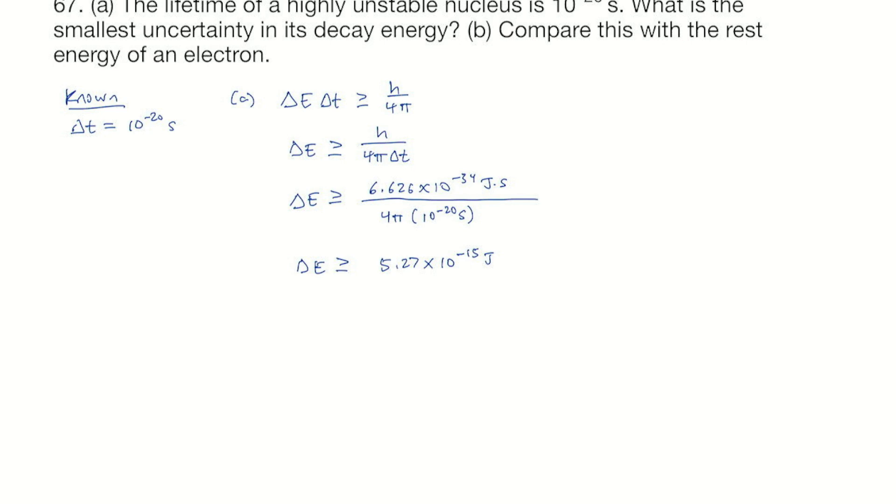Let's turn that into electron volts. One electron volt is 1.6 times 10 to the minus 19 joules. That gives us 3.30 times 10 to the fourth eV.